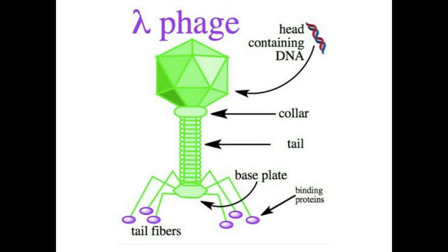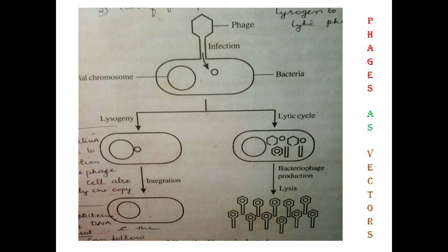Phages follow two pathways inside bacterial cells. The first is the lysogenic pathway, where the phage DNA becomes part of the bacterial genome, remains hidden within it, and is replicated along with the bacterial genome — in that stage we call it a prophage. It remains integrated in the bacterial genome until it enters the lytic pathway.